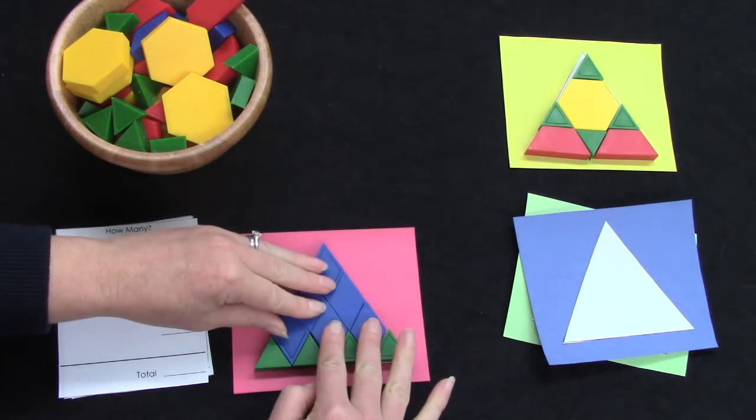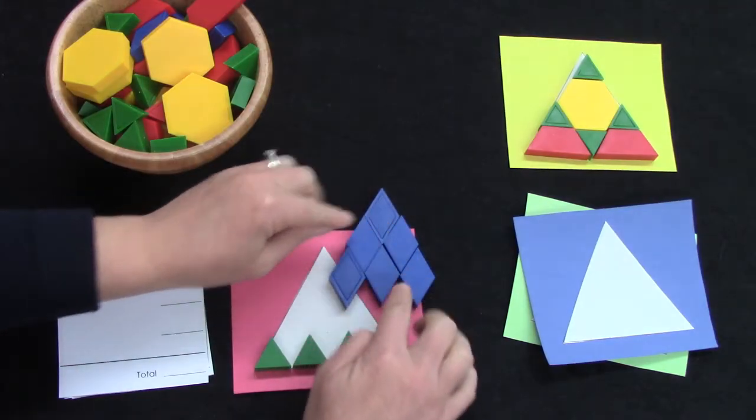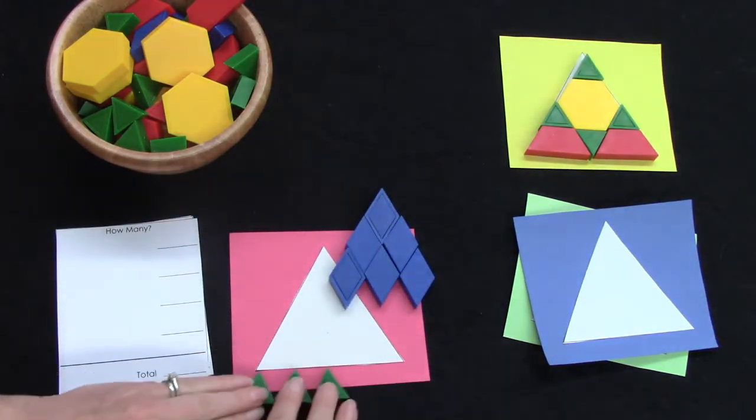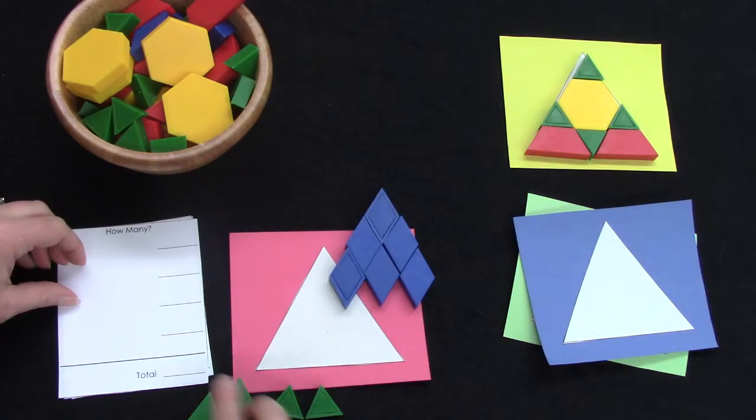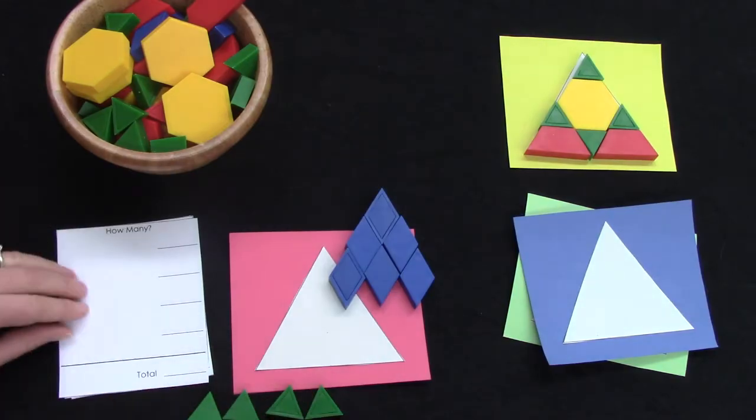When we sort, we take all of the shapes that are alike and put them together. I only have two piles because I only use two shapes.